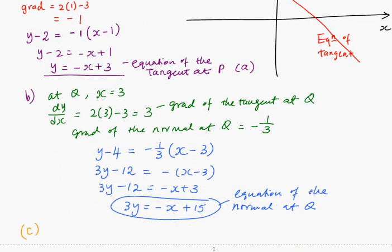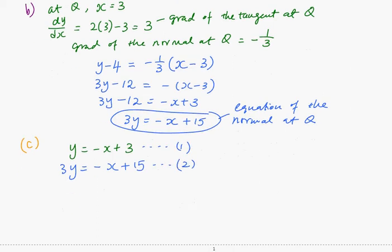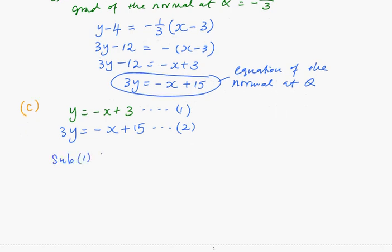So we solve the equation of the tangent, which is y equals to minus x plus 3, with the equation of the normal, which is 3y equals to minus x plus 15.